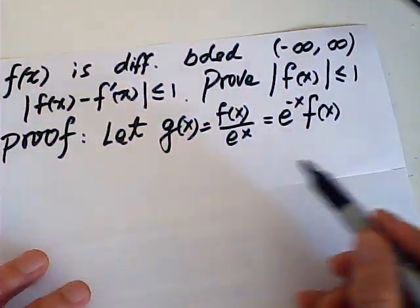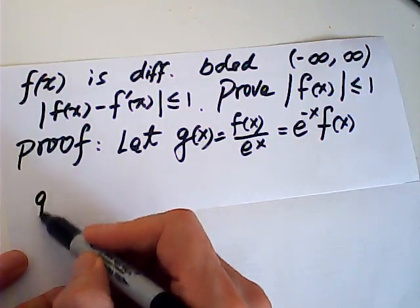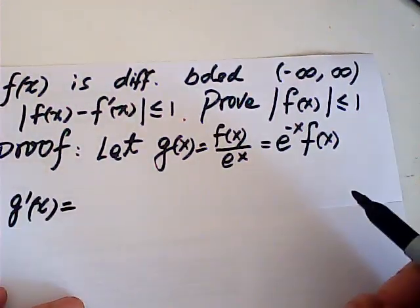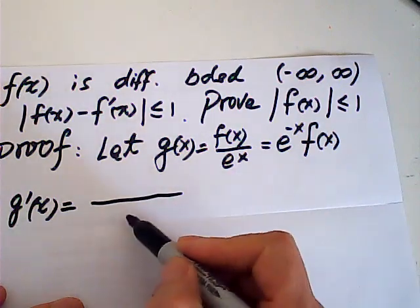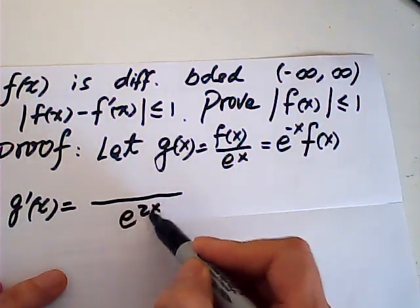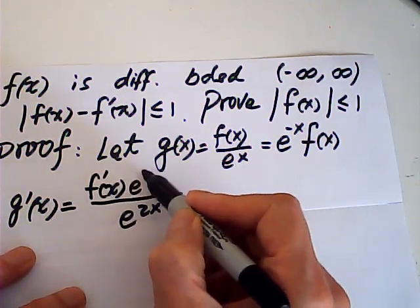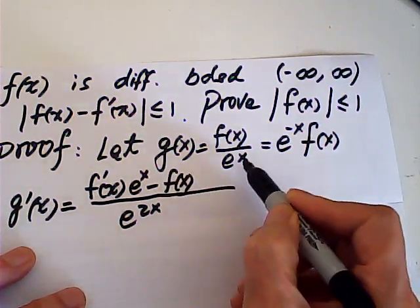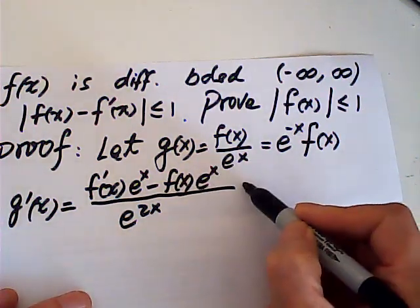And then I take a derivative of g, g prime of x. This is equal to, I can use a quotient rule, e to the 2x, and f derivative times e to the x minus f times e x derivative, which is also e to the x.